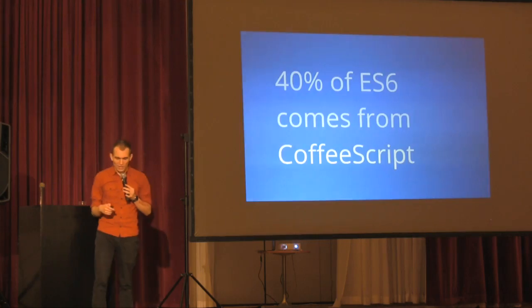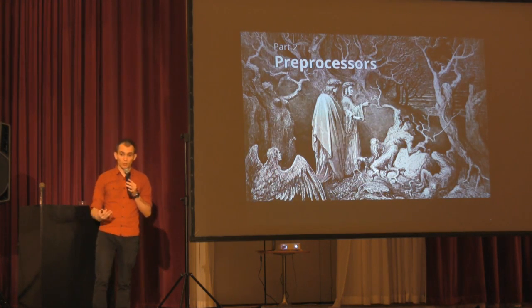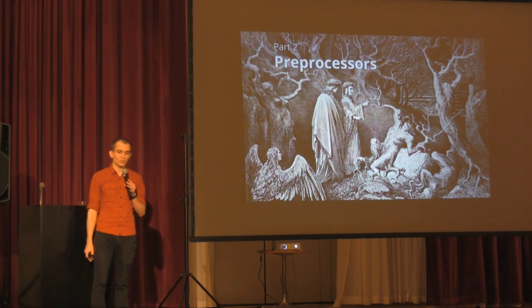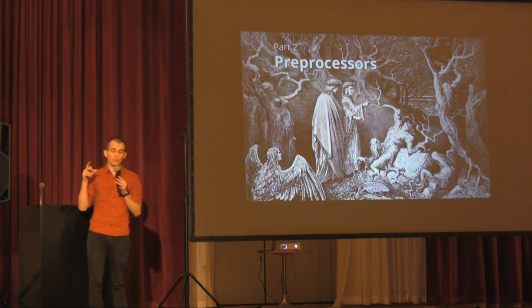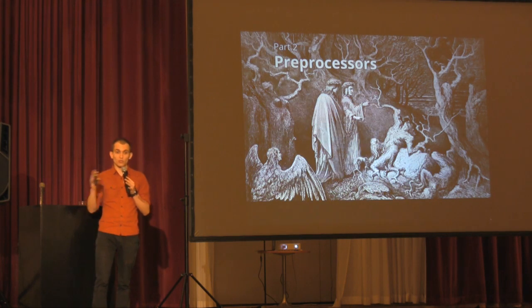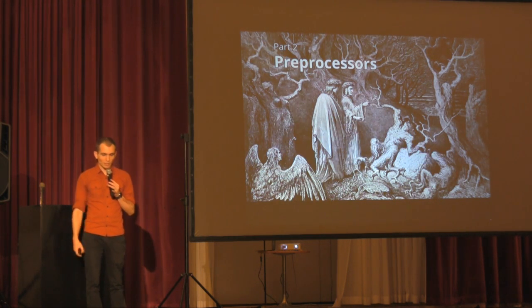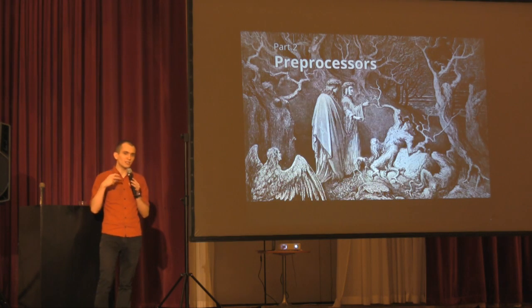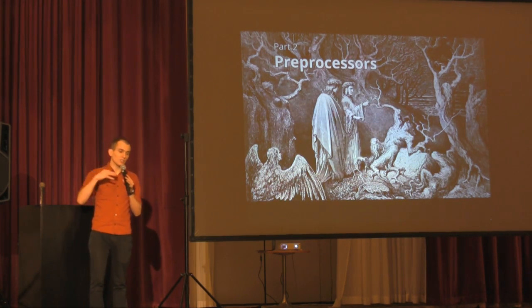For example, 40% of ES6 comes from CoffeeScript, and even ES7 has some ideas from preprocessors — async/await comes from IcedCoffeeScript. I'm very happy about JavaScript preprocessors; there are a lot of crazy ideas, like the time-travel debugger in Elm or ClojureScript — absolutely crazy ideas. But are CSS preprocessors the same? Do CSS preprocessors have the same crazy ideas? I think no, and I'll show you why.